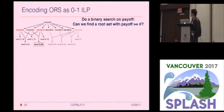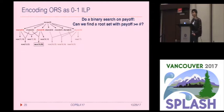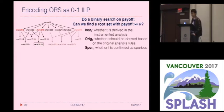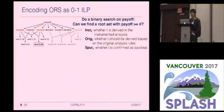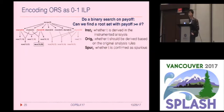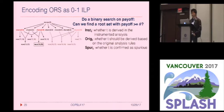Intuitively, each ILP problem asks the following question: can we find a rule set with a payoff not less than a given value? We introduce three variables for each tuple. The INS variable represents whether tuple T is derived in the instrumented analysis. The RIG variable represents whether T is derived based on the original rules. And the SPOR variable represents whether tuple T is confirmed spurious by the user.